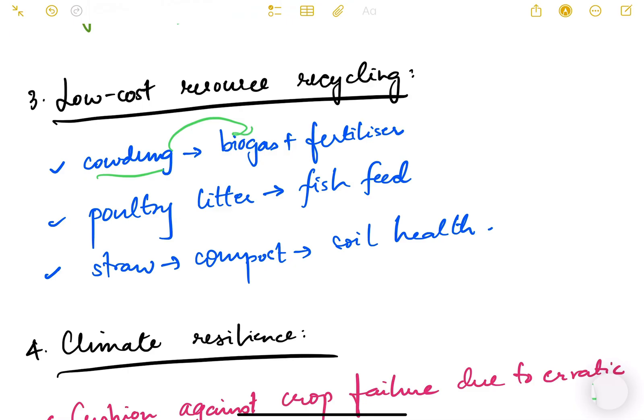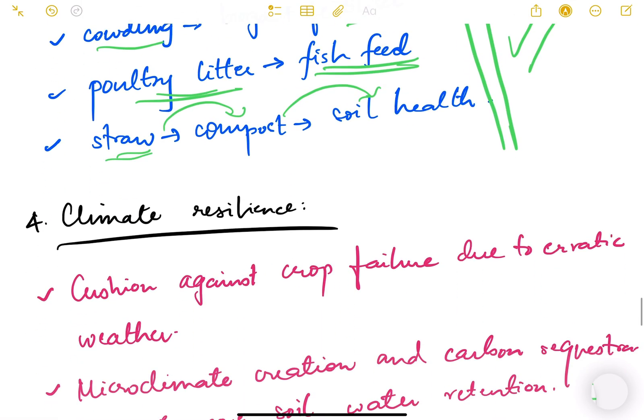Low-cost resource recycling - cow dung can be used for biogas and fertilizer production, manure production. Poultry litter can be used as fish feed and straw, which is the dried part of the plant after harvesting, can be used as compost which can further increase soil health. So again, a very efficient way of using resources.